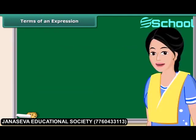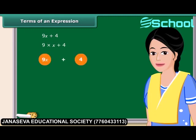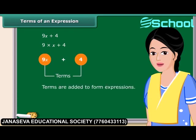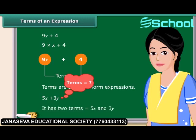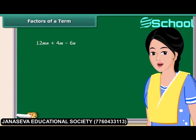Now we will discuss what terms of an expression and their factors are. Consider the expression 9X plus 4. In forming this expression, we first formed 9X separately as a product of 9 and X, and then added 4 to it. Expressions have parts which are formed separately and then added — we call these parts as terms. How many terms are there in 5X plus 3Y? That's right, it has two terms.